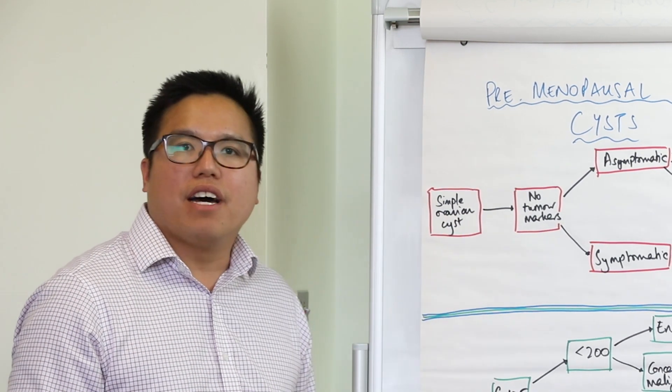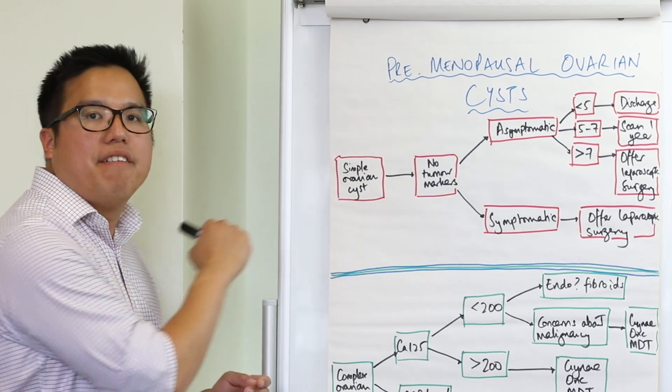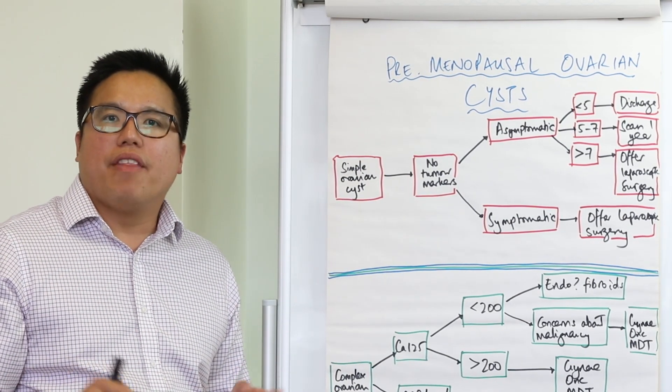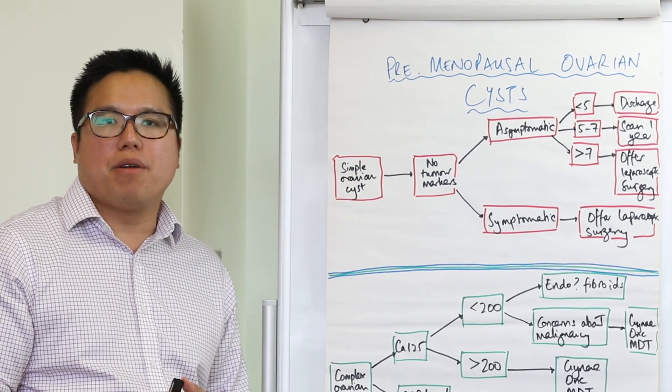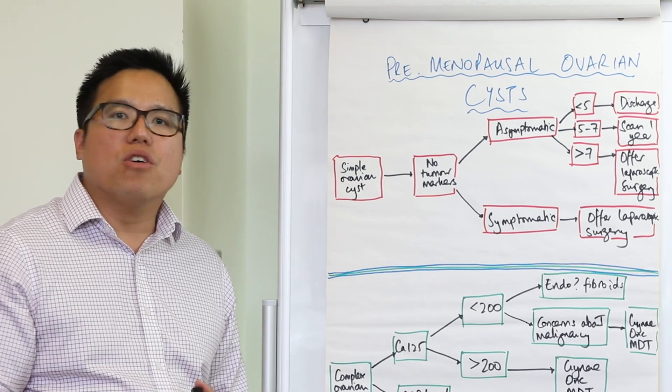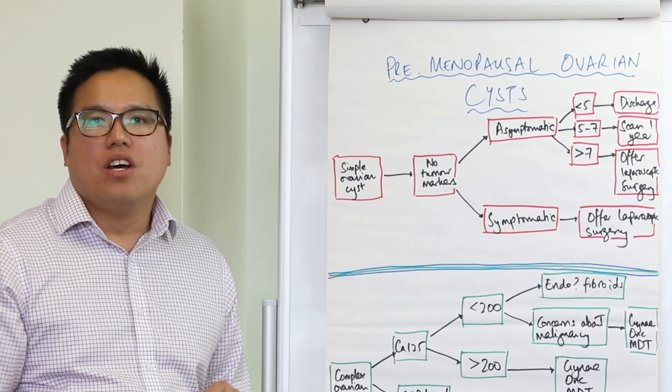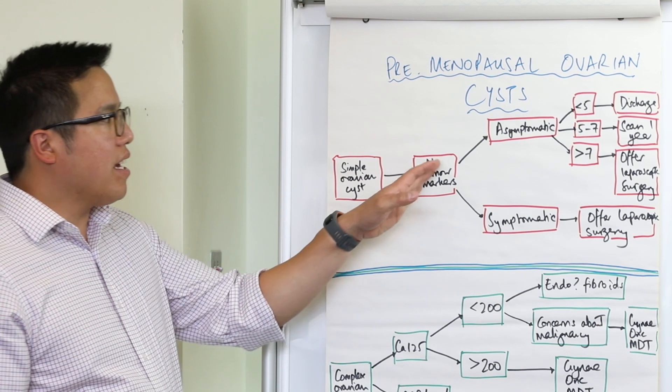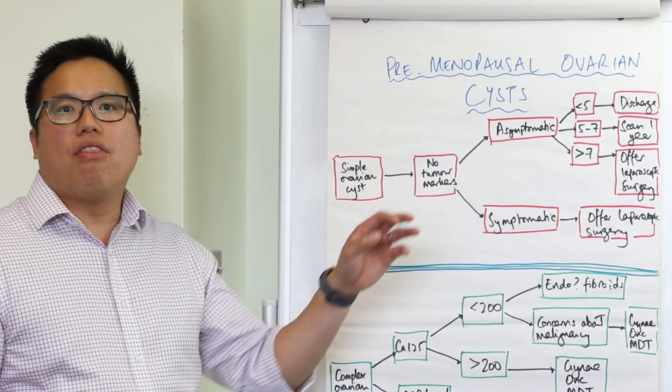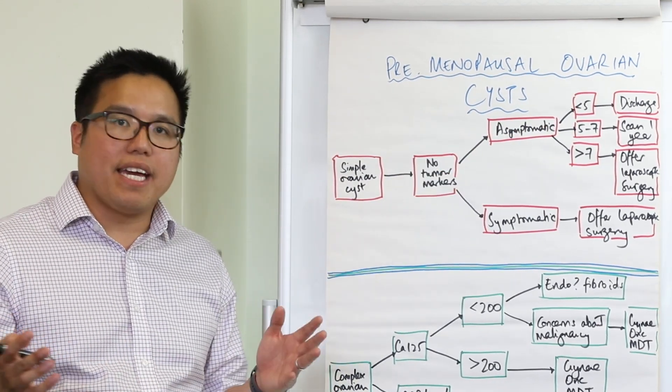Now here's a flowchart that I've made myself and this one is for simple ovarian cysts. Remember there are broadly two groups of pre-menopausal women who've got simple ovarian cysts: those that are asymptomatic running at the top here, and those that have symptoms, usually pain.